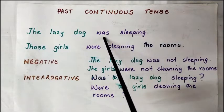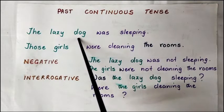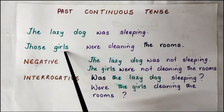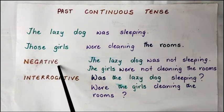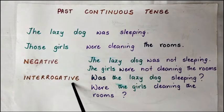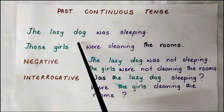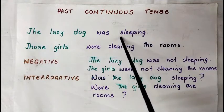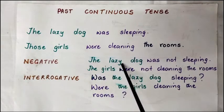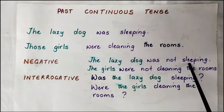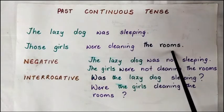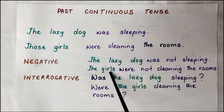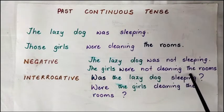'Was' is used when the subject is singular. 'Were' is used when the subject is plural. Then we change the sentences into the negative and the interrogative. The negative of 'the lazy dog was sleeping' will be 'the lazy dog was not sleeping.' The negative of 'those girls were cleaning the rooms' will be 'those girls were not cleaning the rooms.'